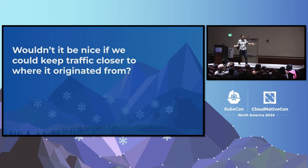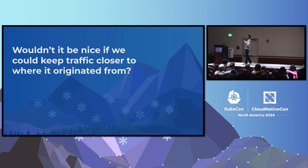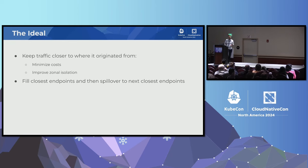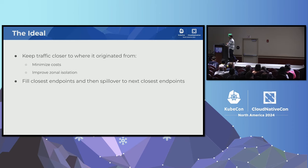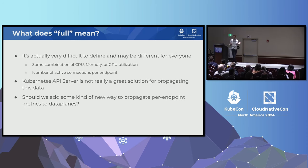Very many people have asked this seemingly simple question: wouldn't it be nice if traffic could just go closer to where it originated from? Naive younger me thought this would be a really cool problem to try and solve — and it is not simple. The ideal is that you can keep traffic close to where it originated, minimize costs, improve zonal isolation, and ideally fill the closest endpoints and then spill over to the next closest. But what does 'full' actually mean? That's a very loaded question — it'll be different for every workload and every organization.